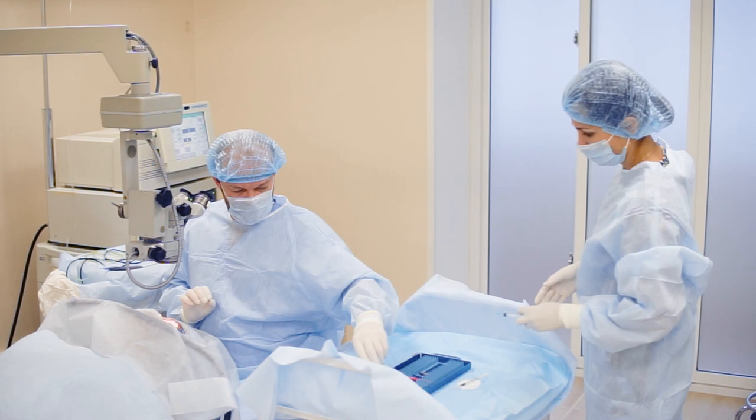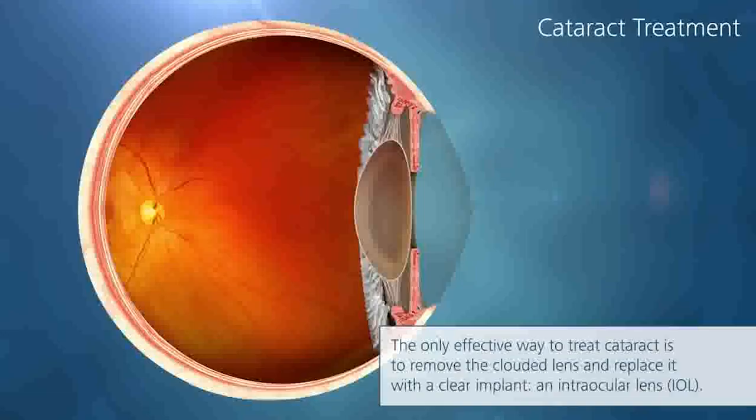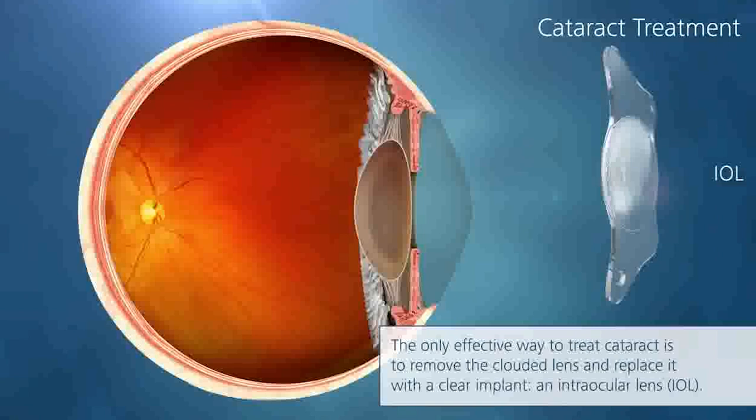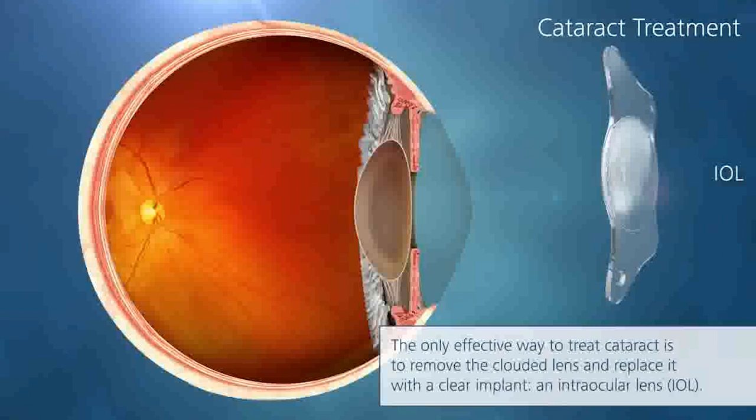During cataract surgery, we remove the cloudy lens from the eye and replace it with a clear artificial intraocular lens, or IOL. There are several IOL options available, each with its own characteristics and benefits. Here are some of the main types of IOLs used in cataract surgery.